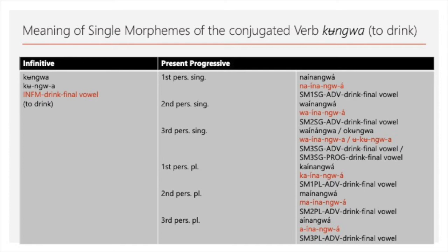I also wanted to explain the morphemes of the second option Nico gave for the third person singular: 'ukungwa'. The 'u' can be the subject marker of the third person singular, and 'ku' can be not only an infinitive marker but also a progressive marker, as 'ina' probably is as well. The rest is the same.